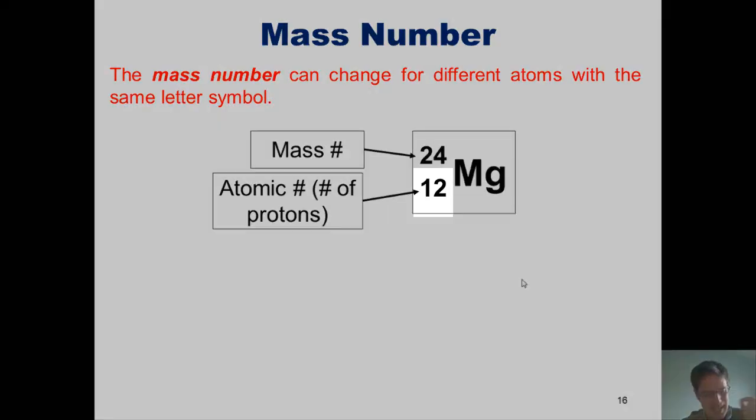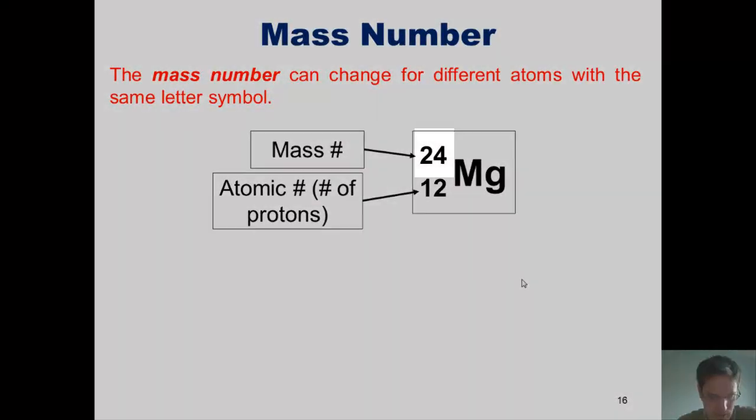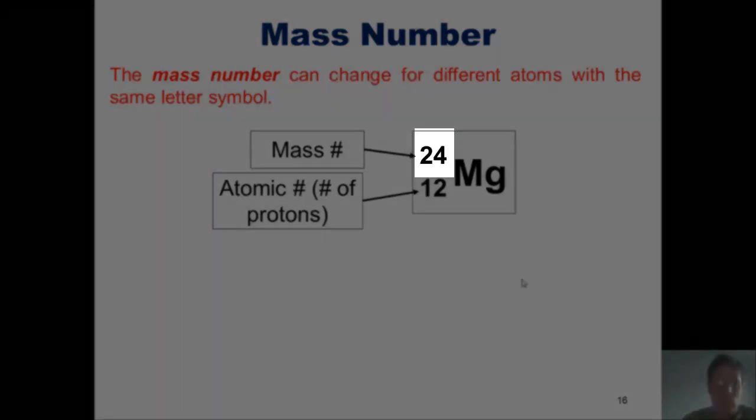So once again, this is magnesium's atomic number, the number of protons that it has, which is 12. And this is magnesium's mass number, its weight, which for this particular magnesium atom is 24.